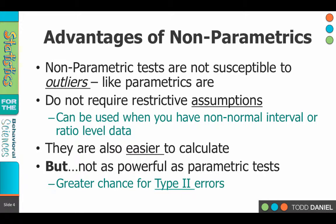Chi-square is something you can do by hand almost as easily as you can do in SPSS. But the trade-off is that when we use non-parametric tests, they are not as powerful as parametric tests — it's harder to find effects that exist. So there's a greater chance for Type 2 errors using non-parametric statistics.